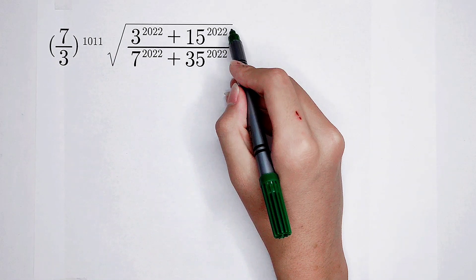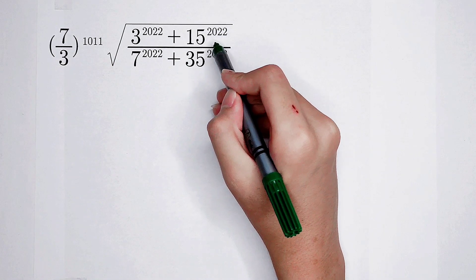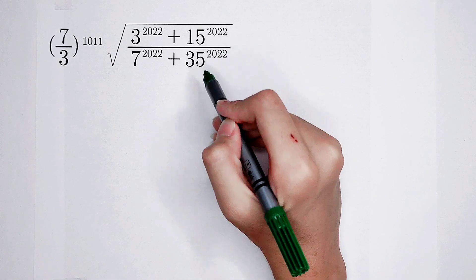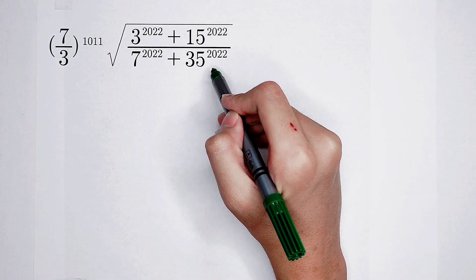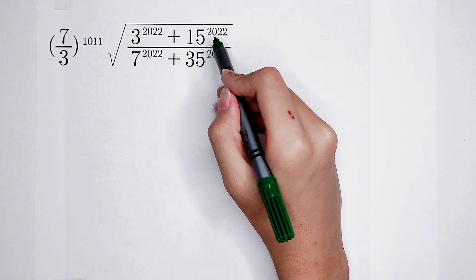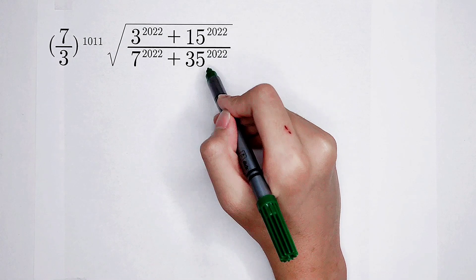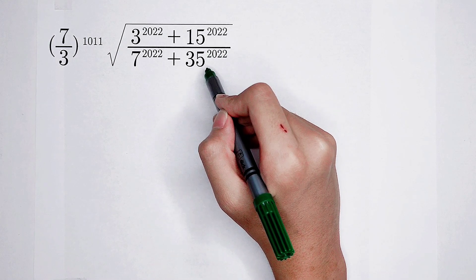Here appears a square root, and here is the numerator, and here is the denominator. The numerator and the denominator are both horrible.